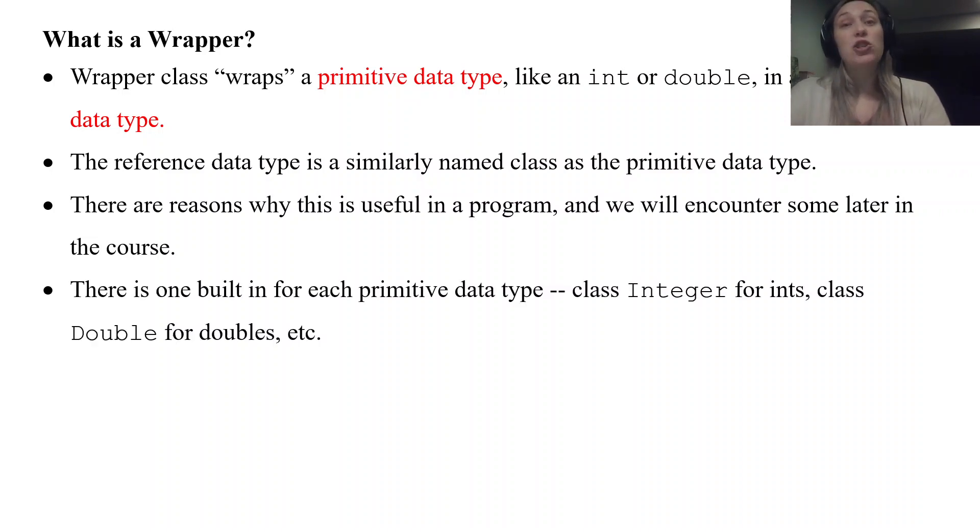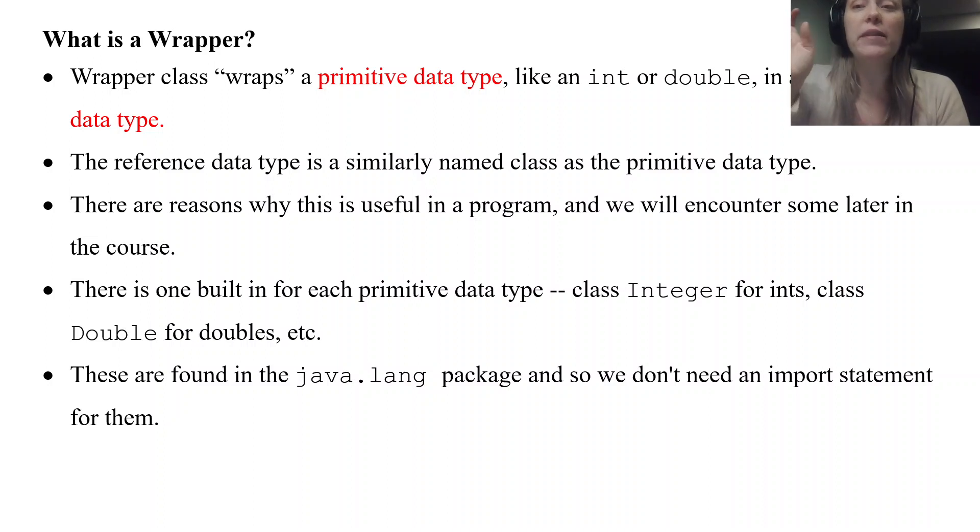So there's one for each primitive data type. We're just going to focus on the two for int and then double. So the class Integer with a capital I is the reference data type for ints and Double with a capital D is the reference data type for doubles. All of these are found in the java.lang package which remember is automatically imported in a Java program so you don't have to have a special import statement. You can just start using and constructing these objects and using the methods.